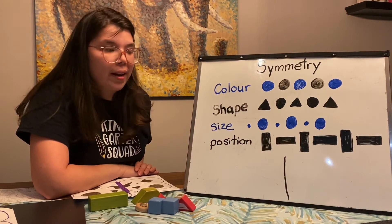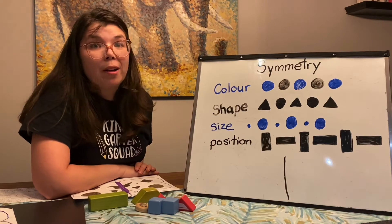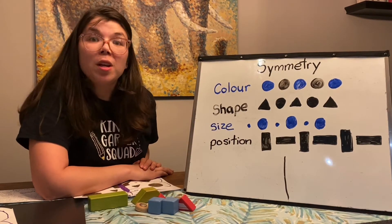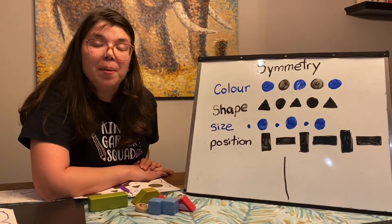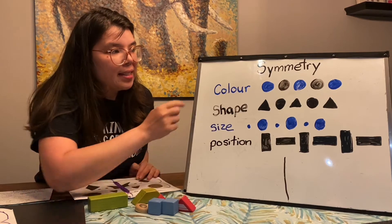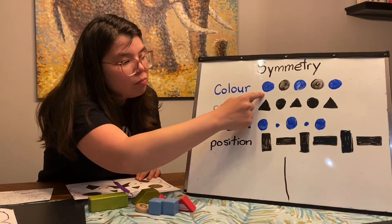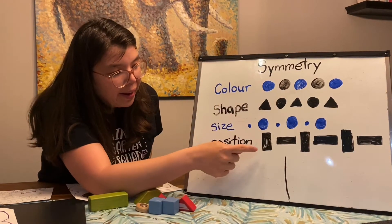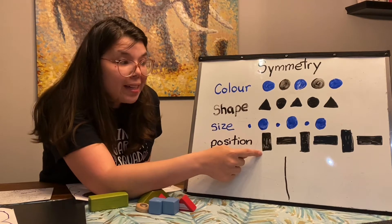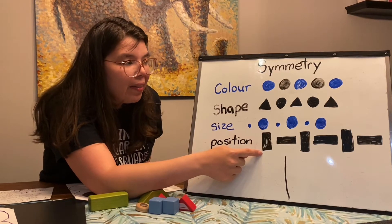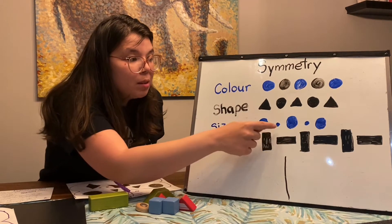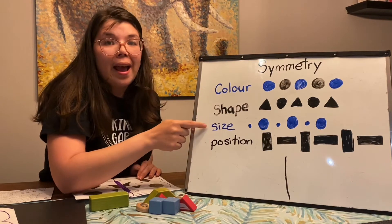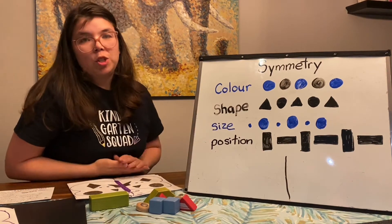When you get to grade one you might make patterns with a bunch of things changing. Like maybe you'll make an AB pattern that has a blue circle and then a tall rectangle and then a small circle, so the color, the position, and the size would all be changing.